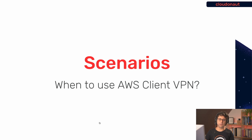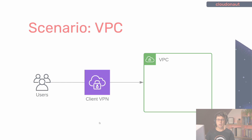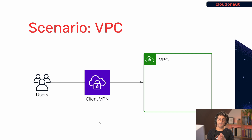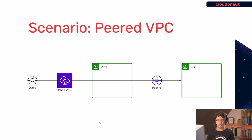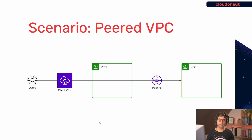Next I want to discuss different networking scenarios for AWS Client VPN. The first is what we already covered — getting network access for users to a VPC, whether DevOps engineers or end users needing to access an internal application. You can also use Client VPN to access a peered VPC, because Client VPN creates an elastic network interface in the VPC, so peered VPCs are reachable from there as well.